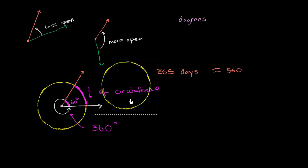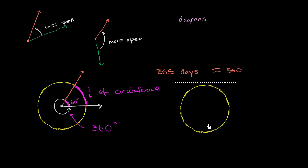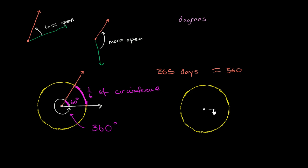Let me do another example. Let's say I have a circle like this and I'll draw an angle, putting the vertex at the center of the circle. I'll put one of the rays right over here — you could consider that to be 0 degrees, meaning if the other ray was also here it would be 0 degrees. And then I'll make the other ray go straight up like this.